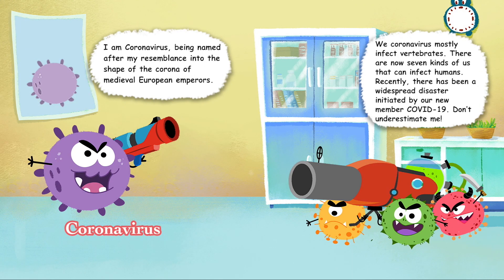I am Coronavirus, named after my resemblance to the corona of medieval European emperors. We coronaviruses mostly infect vertebrates. There are now seven kinds of us that can infect humans. Recently, there has been a widespread disaster initiated by our new member, COVID-19. Don't underestimate me.